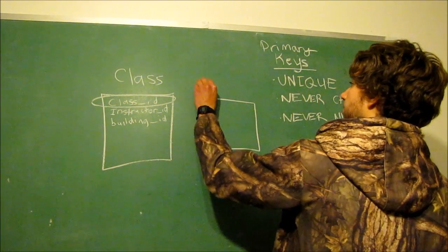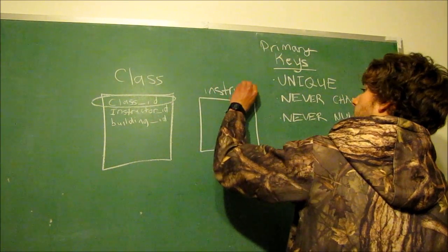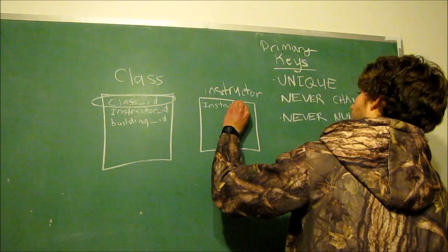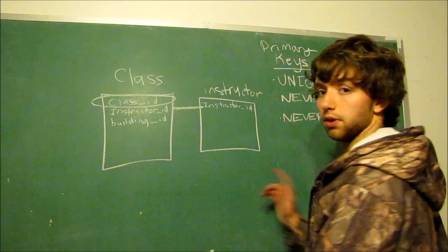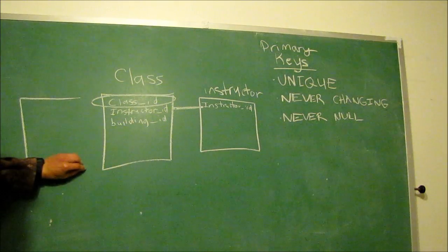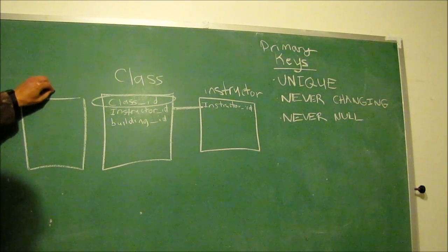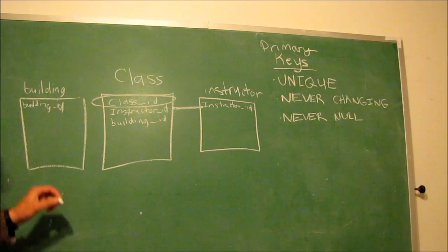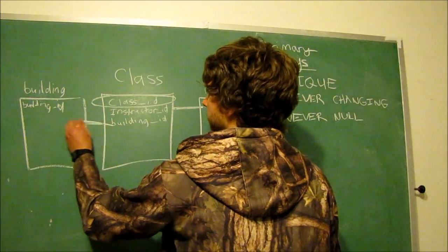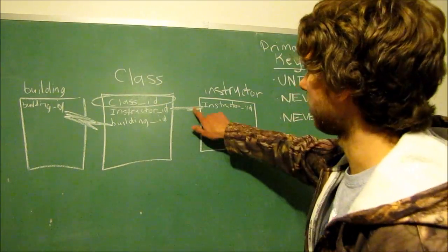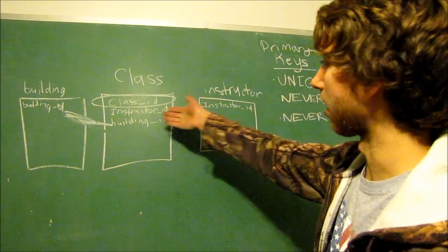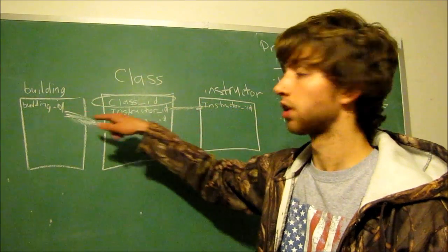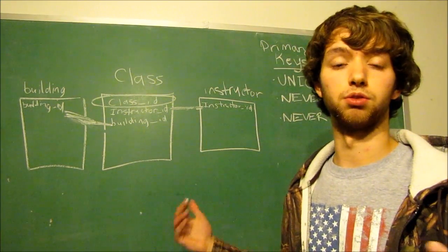That means we have another table — the instructors table — with an instructor ID. You can tell that these columns are a reference. We can also have a building ID referencing another table, which would be the building table, with its own building ID. So you can see there's a connection between these tables. We'll get more into drawing relationships properly in the future, but for now we can see that these columns point to each other, and each individual row is going to point to each other as well.